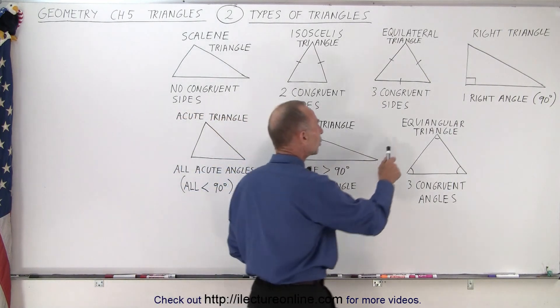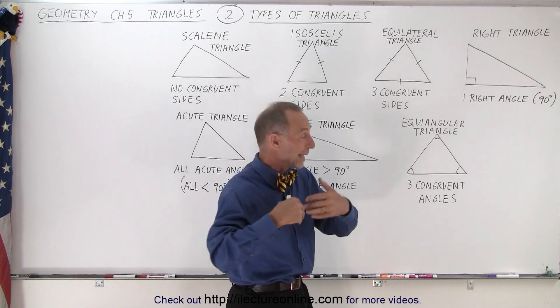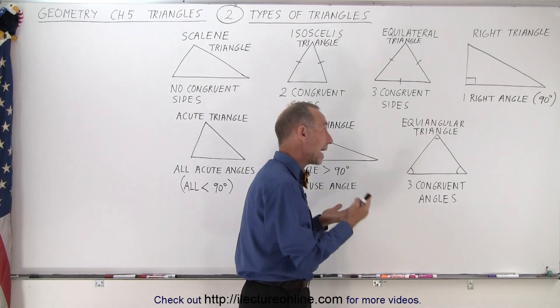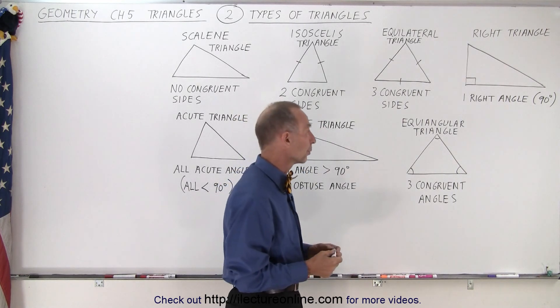And then here we have what we call an equiangular triangle where all three angles are congruent. But if all three angles are congruent then by necessity all three sides must be congruent as well.